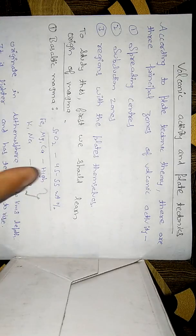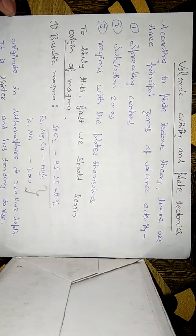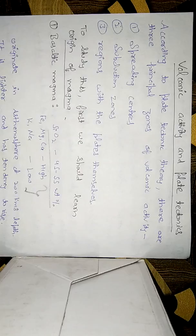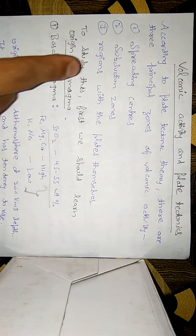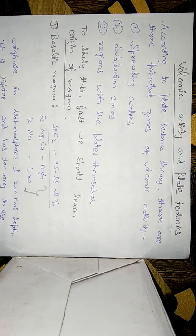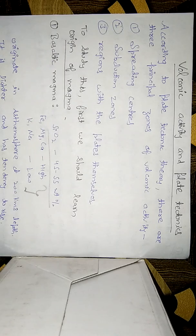The second zone is the subduction zone. Where the convection current goes down, the crust also goes down under another tectonic plate — that zone is called the subduction zone. The third zone is regions within the plates themselves, where somewhere inside the plate volcanic activity takes place. These are the three places where volcanic activity occurs.